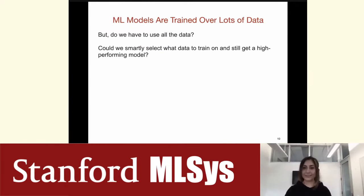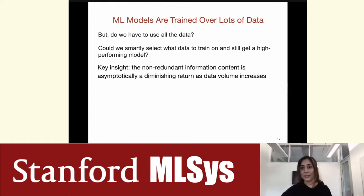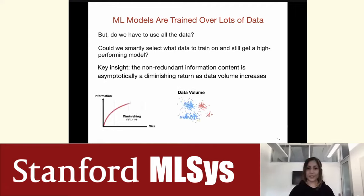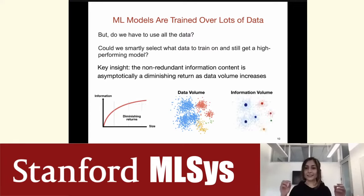We are training modern machine learning models on lots of data points, but do we actually need all of them to get a good-performing model? Could we smartly select a subset and train the same machine learning model much faster? The key insight is that as the amount of data increases, the non-redundant information content doesn't linearly increase with the size of the data — there is a diminishing return. Can we find this information volume, the non-redundant part, and only train on it?